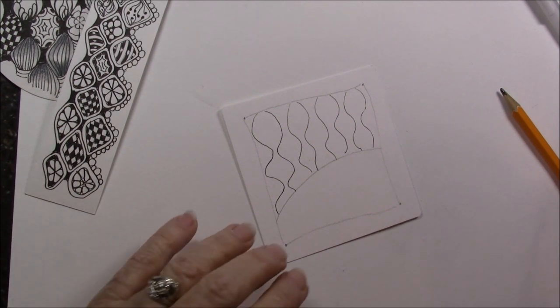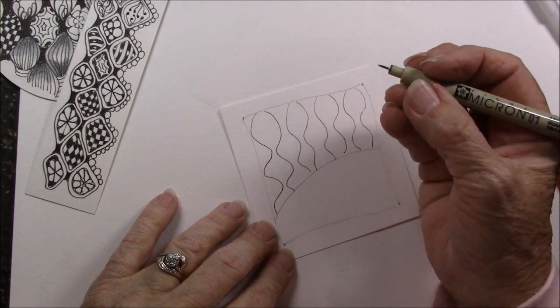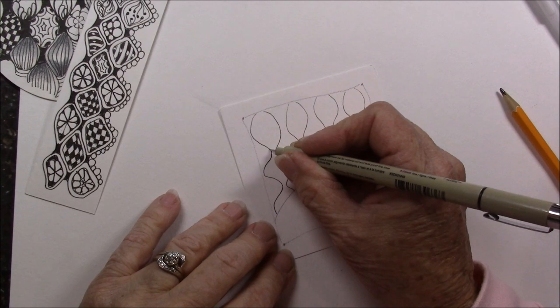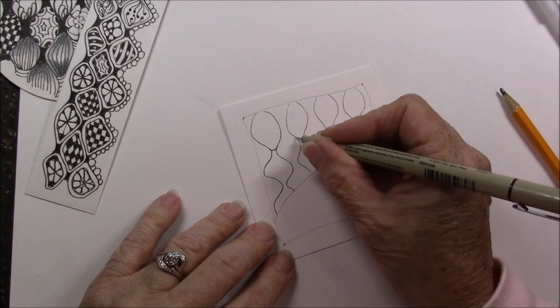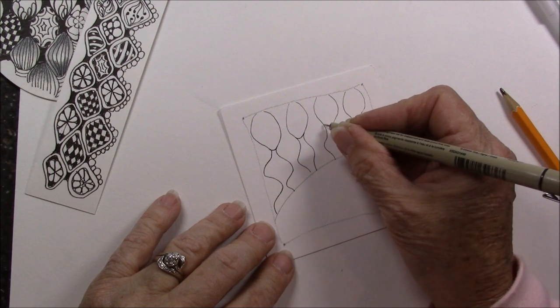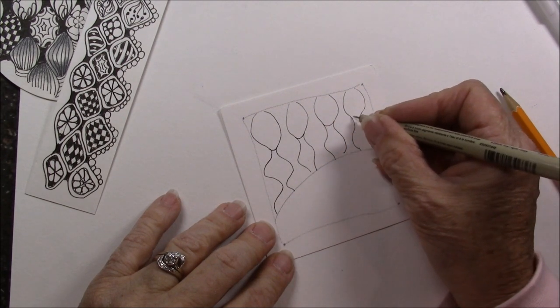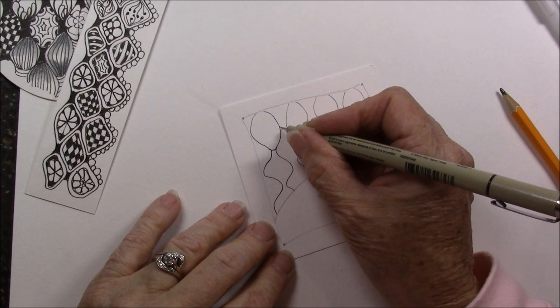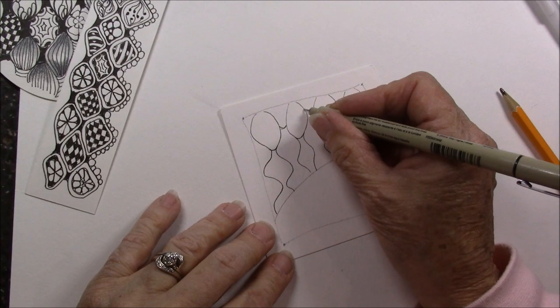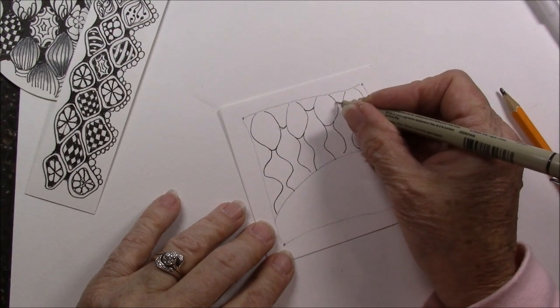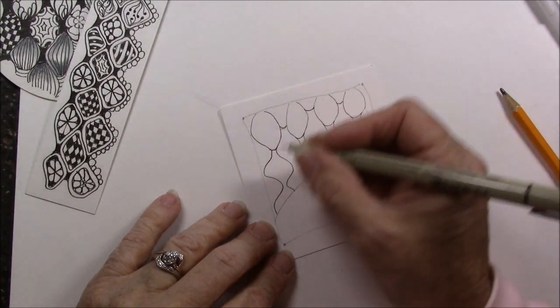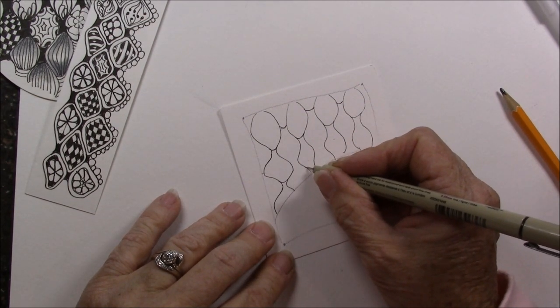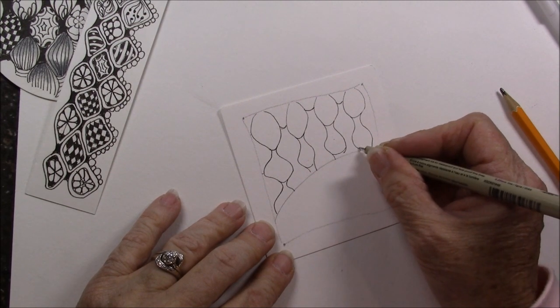If you make what you might call a mistake, remember there's no mistakes in Zentangle. Now we've got all our little wavy lines. We're going to connect a line right here, just a little round one, just a little smiley face.